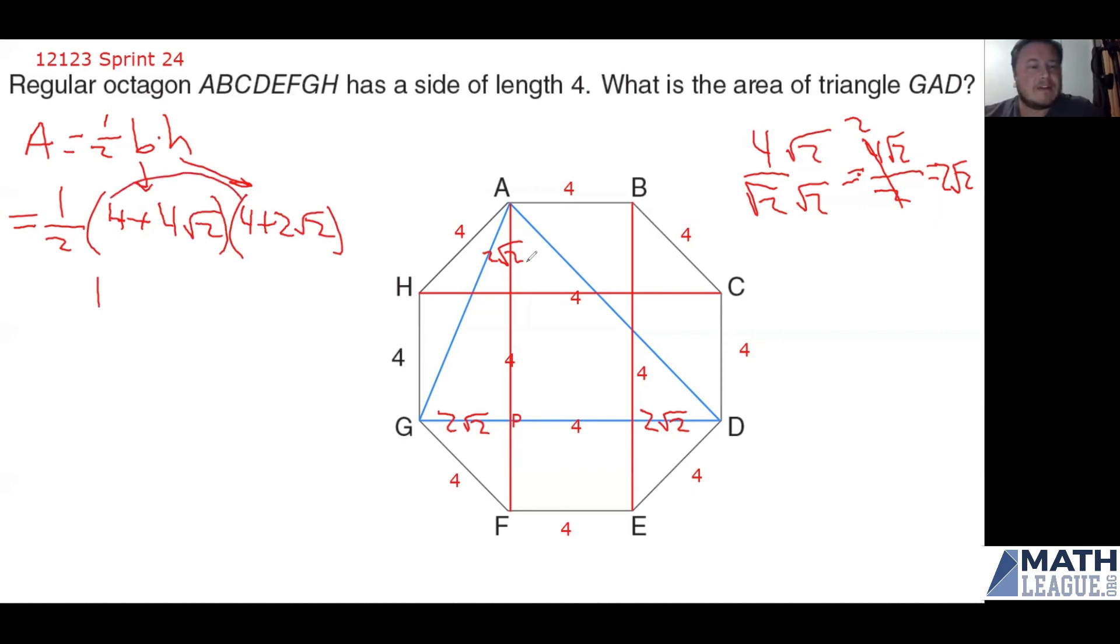So let's multiply this out. 4 times 4 is 16. 4 times 2 root 2 is 8 root 2. 4 root 2 times 4 is 16 root 2. And 4 root 2 times 2 root 2. Well, the 4 times 2 gives me an 8. The root 2 times the root 2 gives me a 2. So I've got 8 times 2. Now remember, that's all being multiplied by a half.